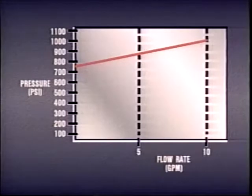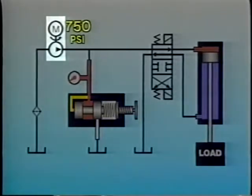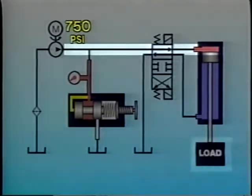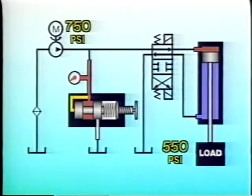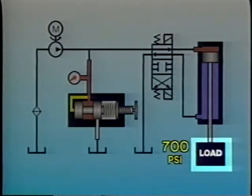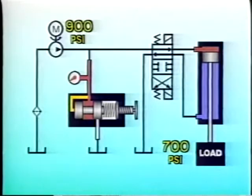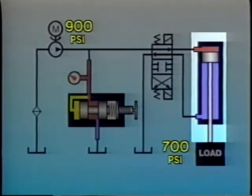Flow through the valve changes as pressure rises from cracking pressure to full rated pressure. Therefore, the cracking pressure of a relief valve must be taken into account when a particular flow rate is important. For example, the relief valve is set to open at 1,000 psi, and the pump develops 750 psi to deliver 10 gpm to the cylinder — 550 psi to move the load and 200 psi to overcome fluid resistance. But if resistance increases to 700 psi, the pump must develop 900 psi, which might open the relief valve about halfway, allowing 5 gpm to return to tank. If that happens, the cylinder will fill much more slowly and rod velocity will be substantially reduced.